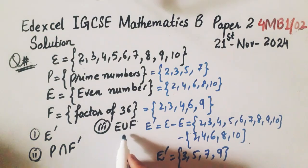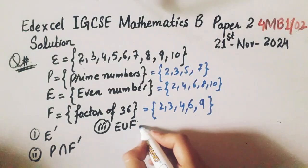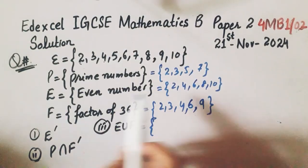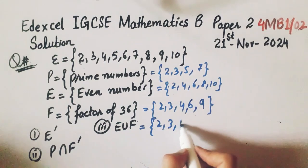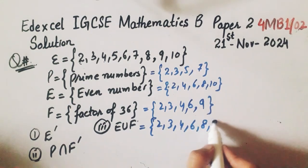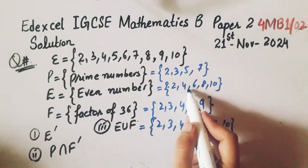Now we have to find E union F. So E union F means take the union of E and F. So 2, 3, 4, 6, 8, 9, and 10. We just take the union of E and F.